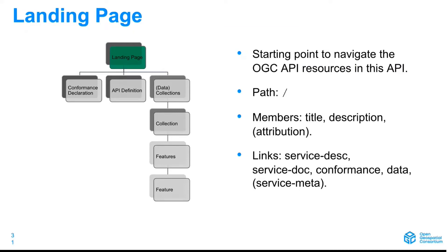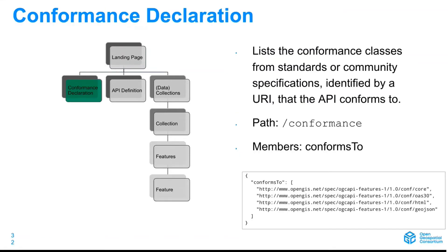How does this look? We start with a landing page at the root, and from there we can navigate to the other paths. The conformance declaration lists the conformance classes from the standards available on that particular server. In this case you can see the server is conforming to all these conformance classes — OGC API Features part one, GeoJSON, HTML, and so on — so the client, when consuming this, knows what they can expect from the server.